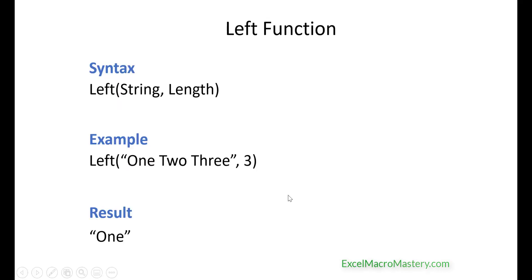Left is possibly the simplest function in VBA. It returns a given number of characters from the left of a string and it requires the string and the number of characters you want to return. The key thing to remember is that the original string is not changed. We get the result of the function and we store it in a different string. The original string remains the same.